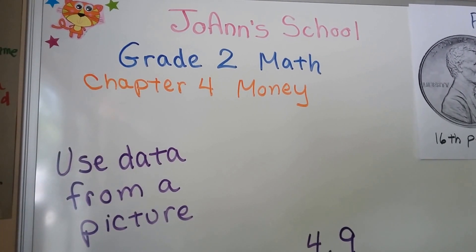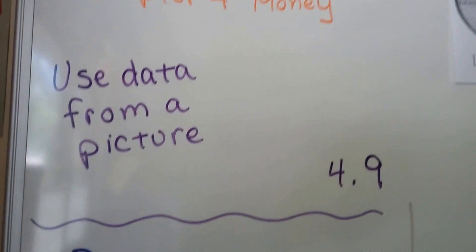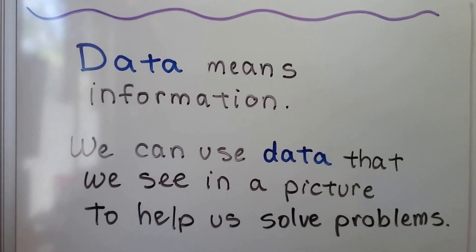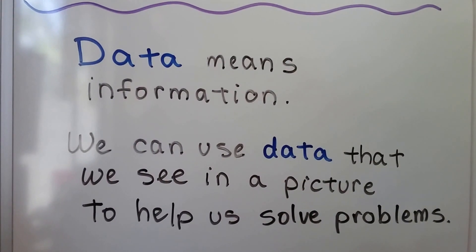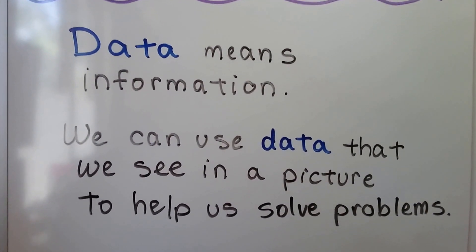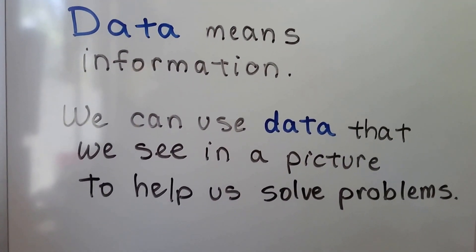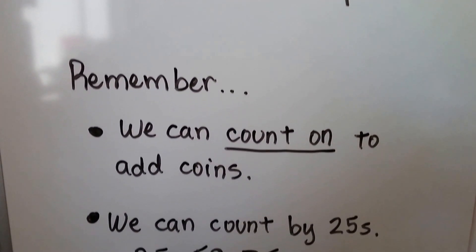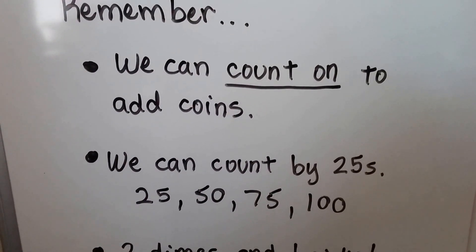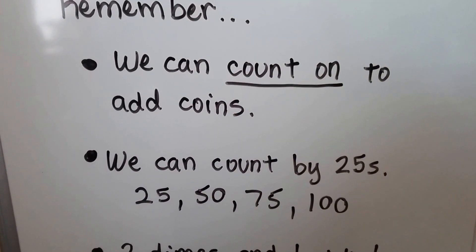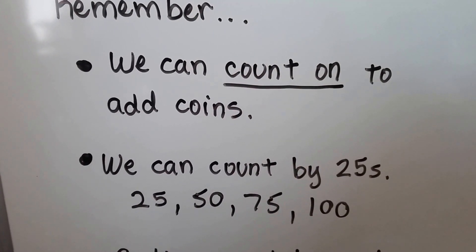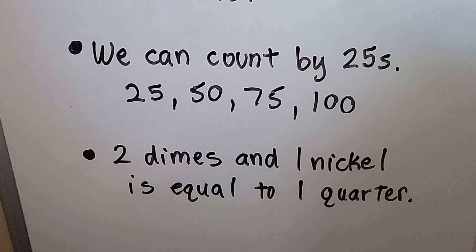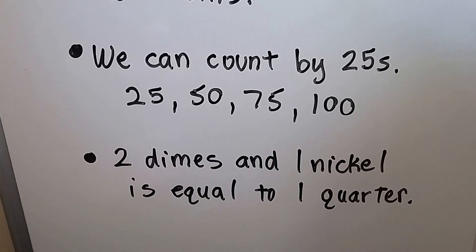Lesson 4.9: Use Data from a Picture. Data means information. Some people say 'data.' We can use data that we see in a picture to help us solve problems. Remember, we can count on to add coins. We can count by 25s: 25, 50, 75, 100. And remember that two dimes and one nickel is equal to one quarter.